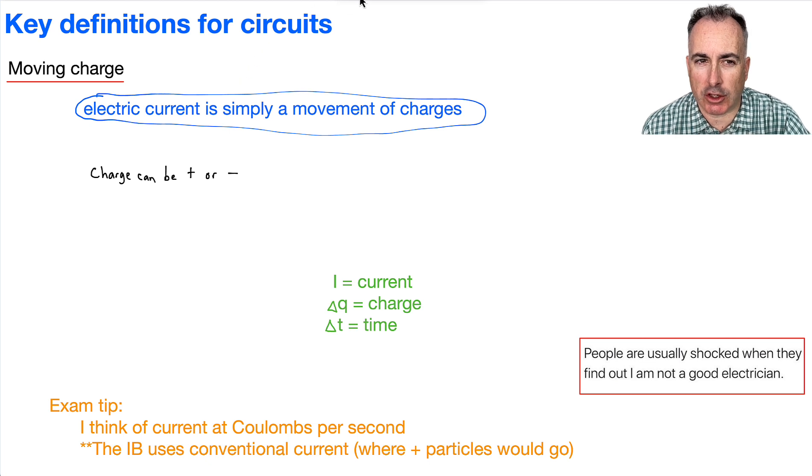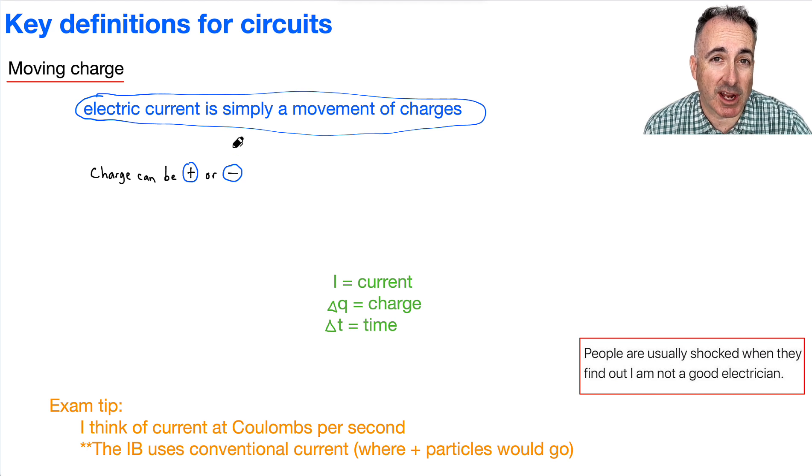So we're going to define electric current as just a movement of charges. And just to remind you, remember that charges can be positive, for example, they can be negative, so there's two different types of charge. Do you remember that a positive and a positive, they repel each other? Negative and a negative repel each other. And we've got a positive and a negative, they attract each other.